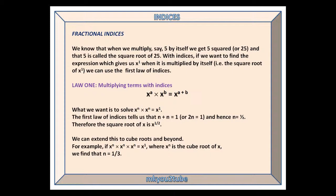What we want is to solve x^n × x^n = x^1. The first law of indices tells us that n + n = 1, or 2n = 1, and hence n equals a half. Therefore, the square root of x is x to the power of a half. We can extend this to cube roots and beyond. For example, if x^n × x^n × x^n = x^1, where x^n is the cube root of x, we find that n is a third.